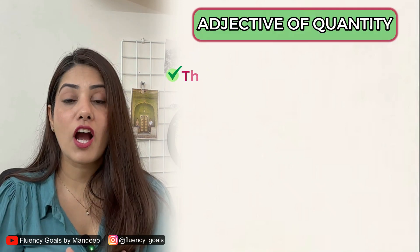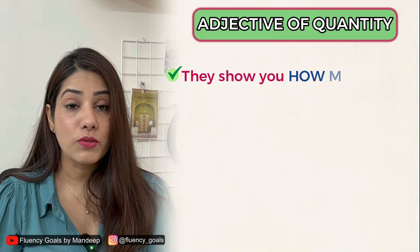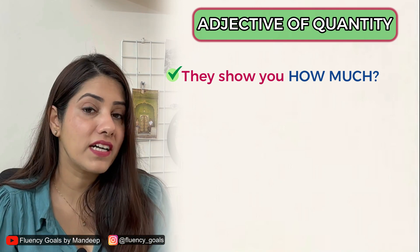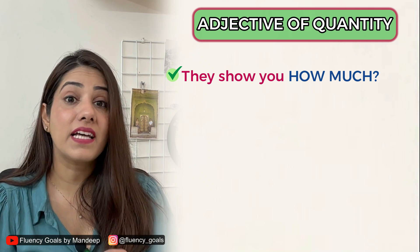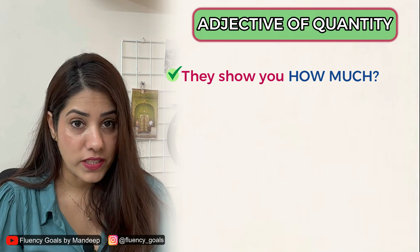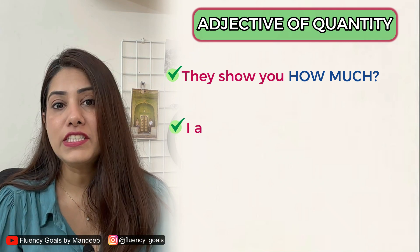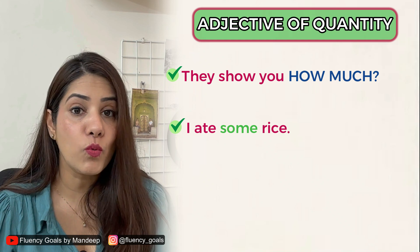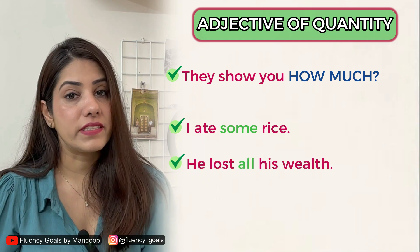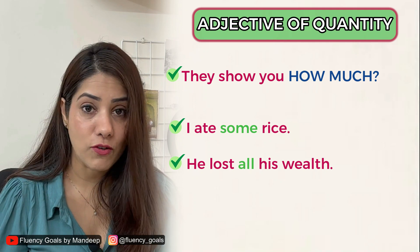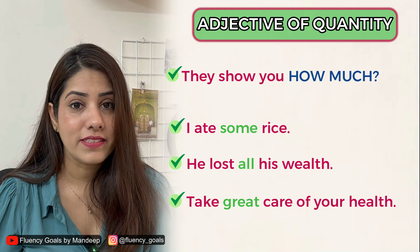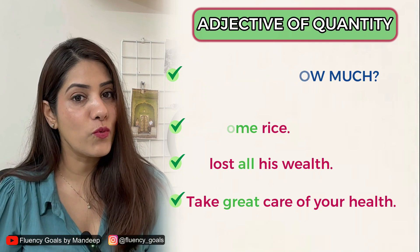The next type is adjective of quantity. They show how much of a thing is meant. To identify an adjective of quantity, you ask 'how much?' after the noun. Examples: 'I ate some rice' — how much? Some. 'He lost all his wealth' — how much? All. 'Take great care of your health' — how much care? Great. So 'some', 'all', and 'great' are adjectives of quantity.